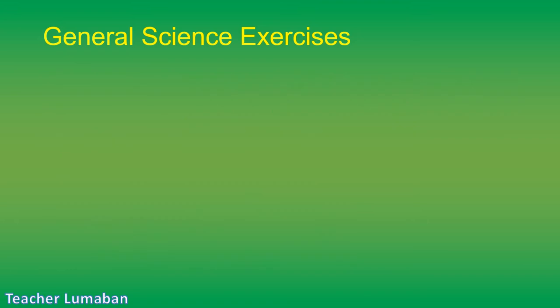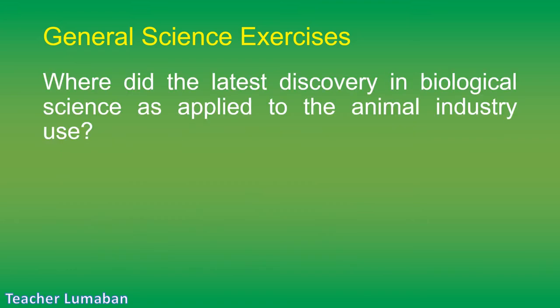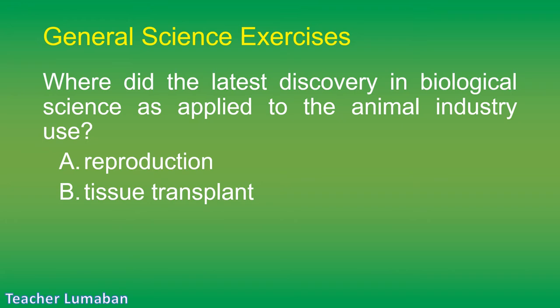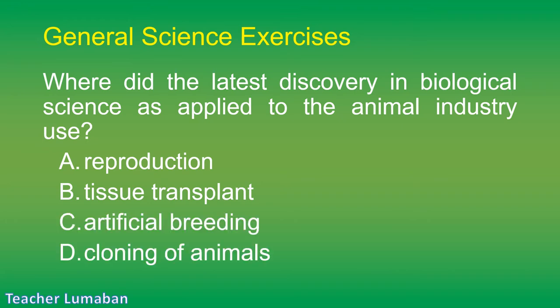Where did the latest discovery in biological science as applied to the animal industry find use? Letter A: reproduction. Letter B: tissue transplant. Letter C: artificial breeding. Letter D: cloning of animals.